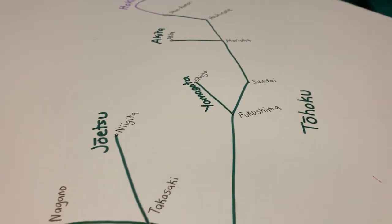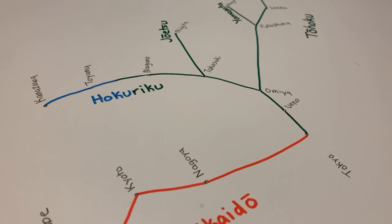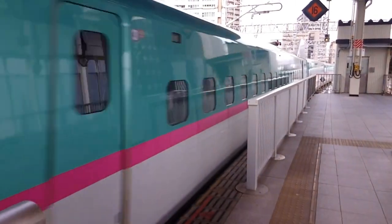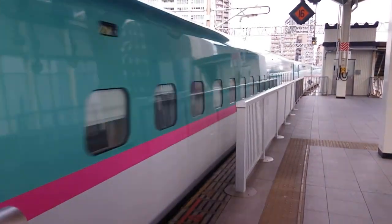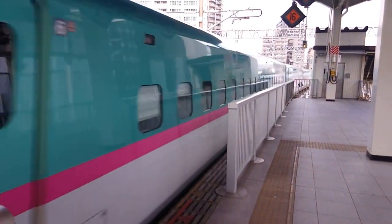But did you know that the entire Shinkansen network, stretching from Hokkaido in the north to Kyushu in the south, is made up of a total of nine lines, adding up to more than 2,600 kilometers of track just for the Shinkansen network alone.